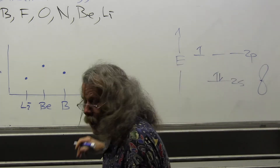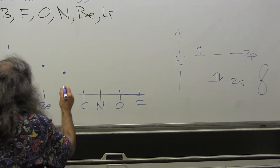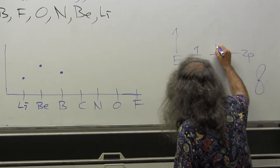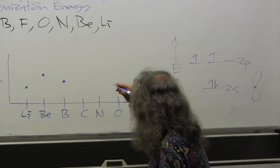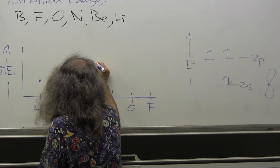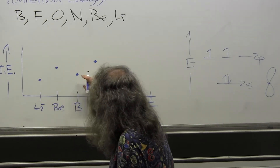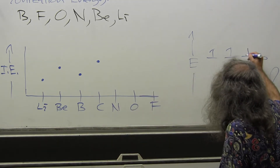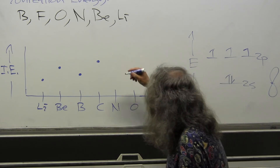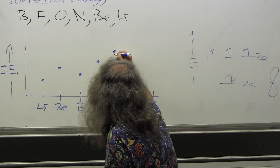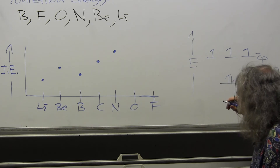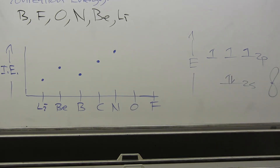Going from boron to carbon, we've already accounted for the p electron difference. Carbon is also a p electron, so there's an increase in ionization energy above that of boron. Continuing from carbon to nitrogen, the same applies — an increase in nuclear charge means the ionization energy keeps increasing.